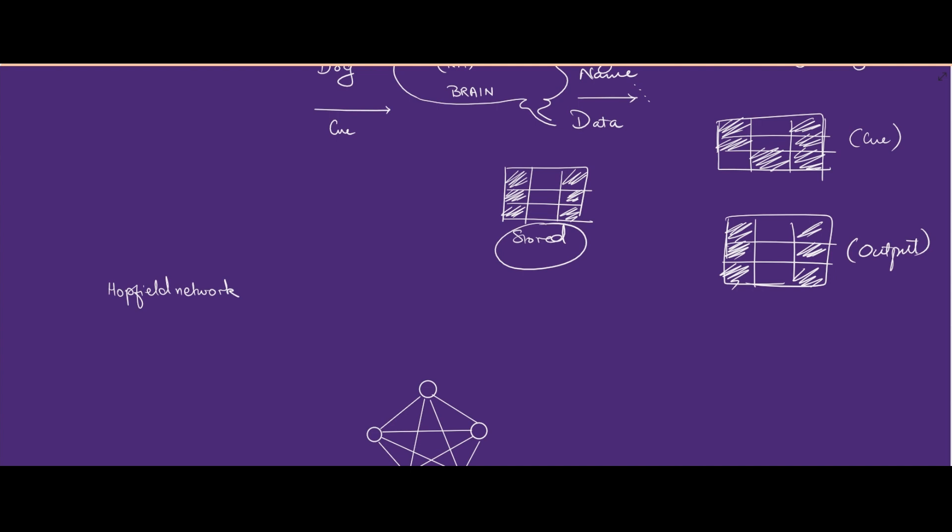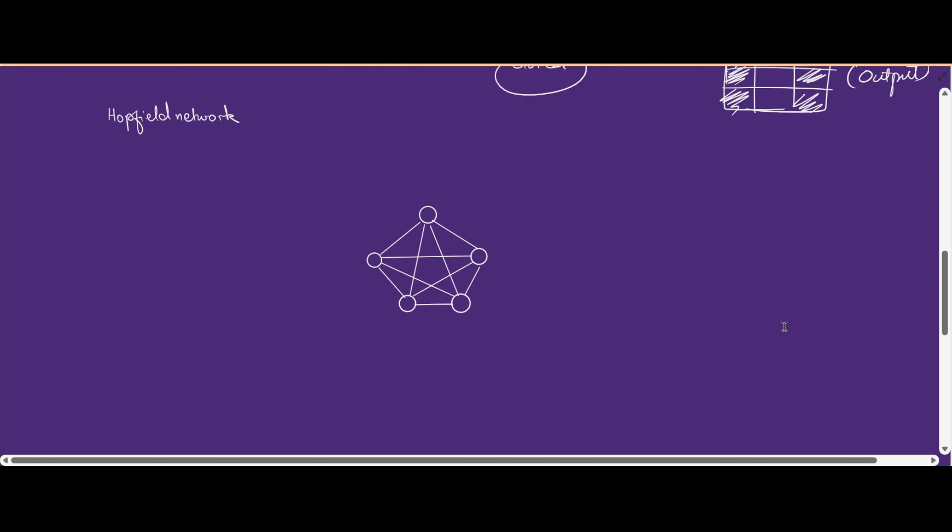This is how associative memories work. In conventional computer memory we give an address, whereas for associative memory we give a cue. Importantly, cues can be partially correct, but addresses have to be completely correct. So we can see the clear difference between how conventional computer memory works and how associative memory works.